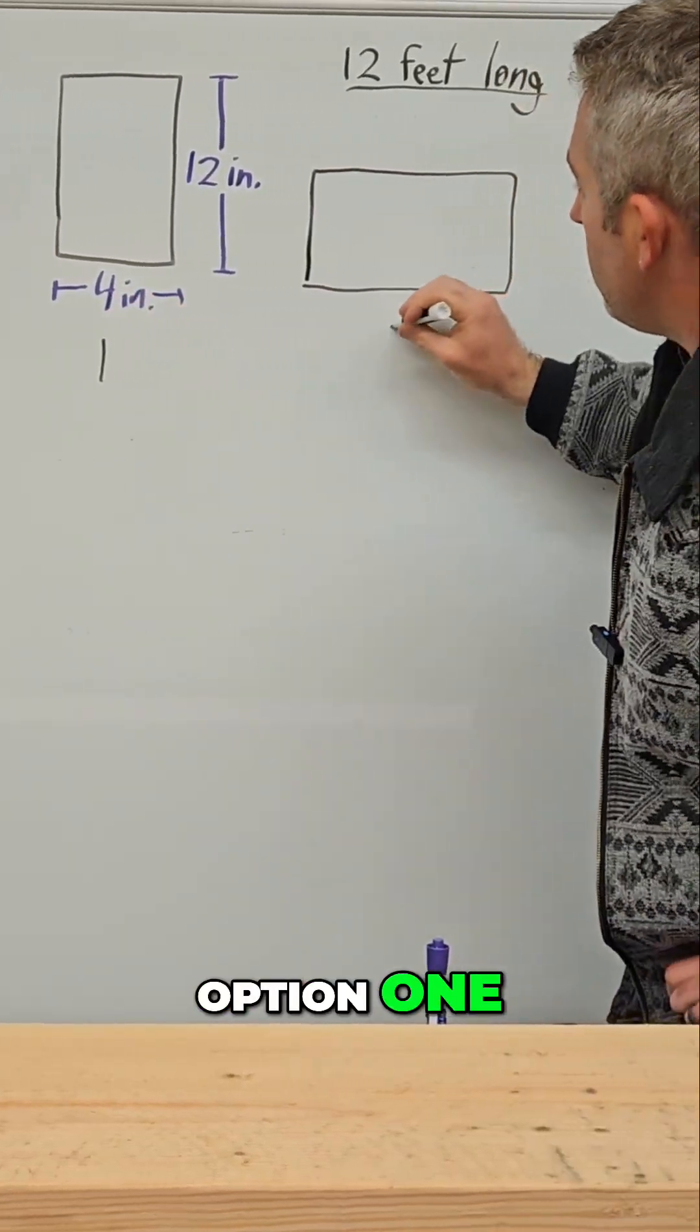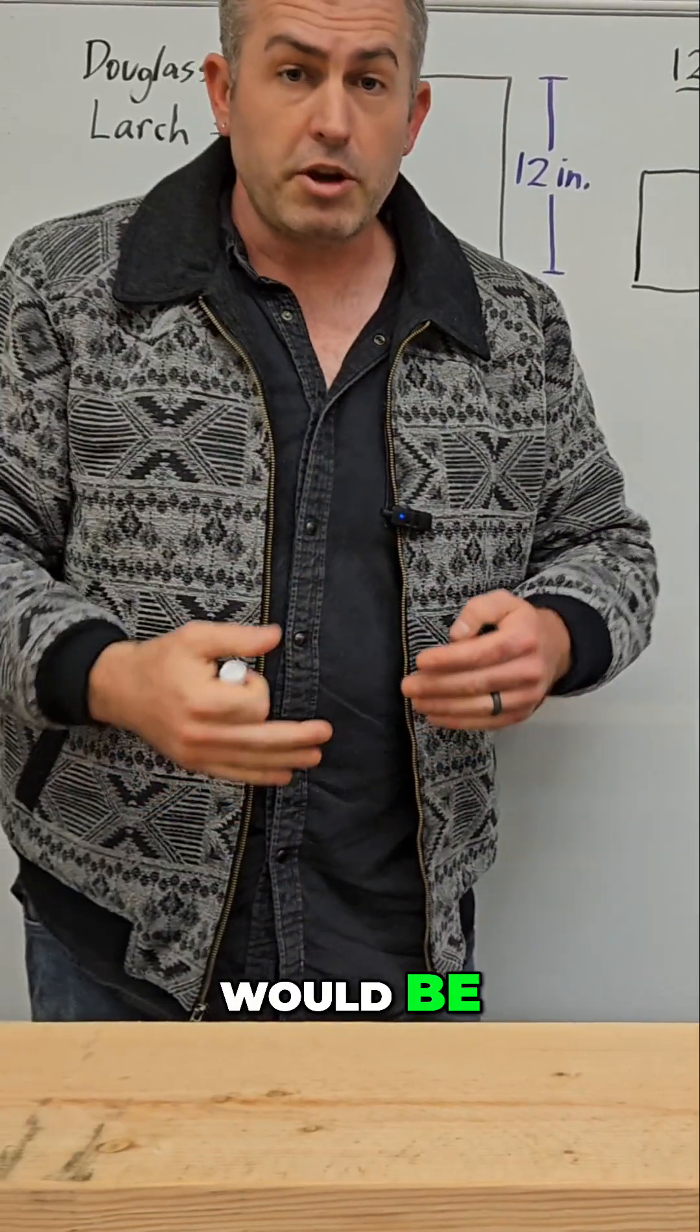So let's call this option one. This is option two. And then option three would be their equal strength.